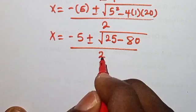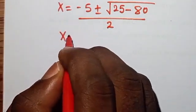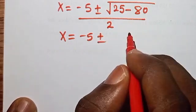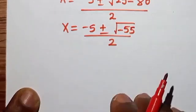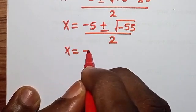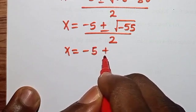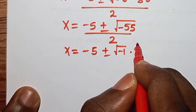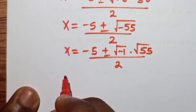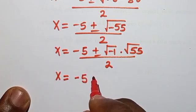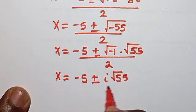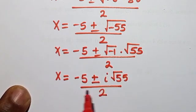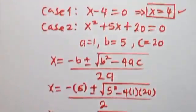Simplifying: x = (-5 ± √(25 - 80)) / 2 = (-5 ± √(-55)) / 2. Since √(-55) = √(-1) · √55 = i√55, we get x = (-5 ± i√55) / 2.